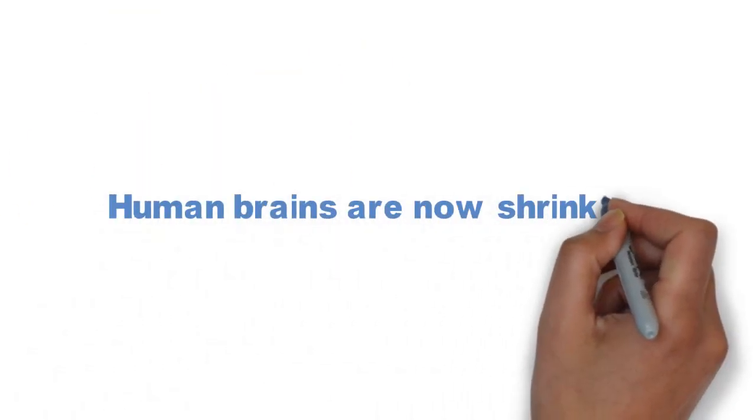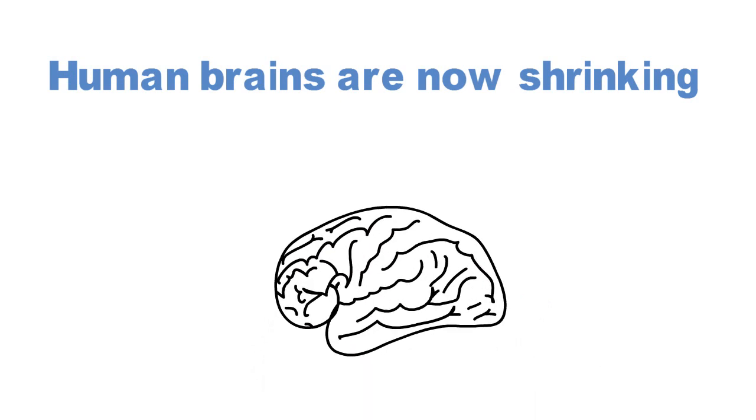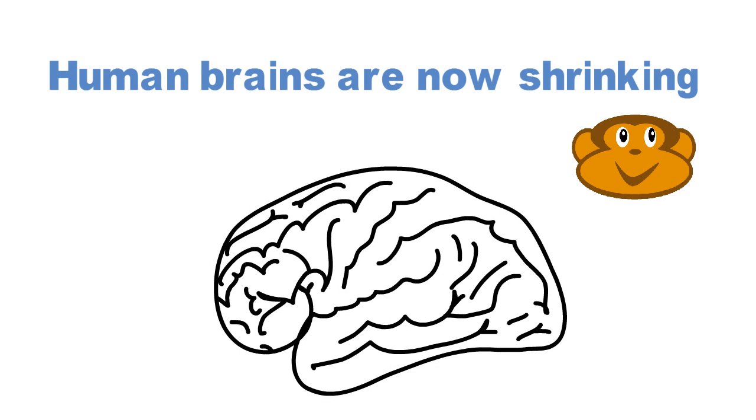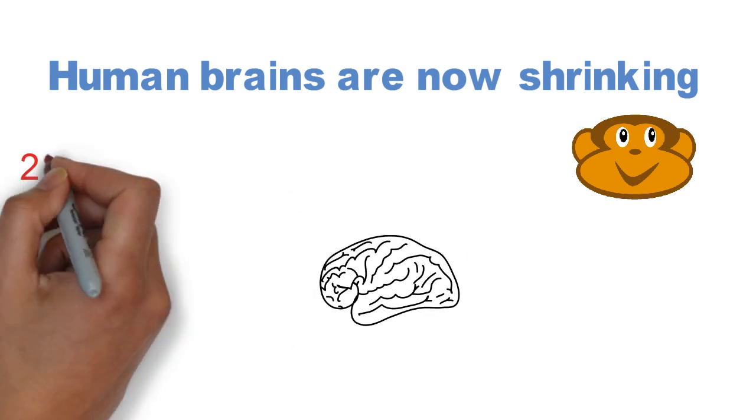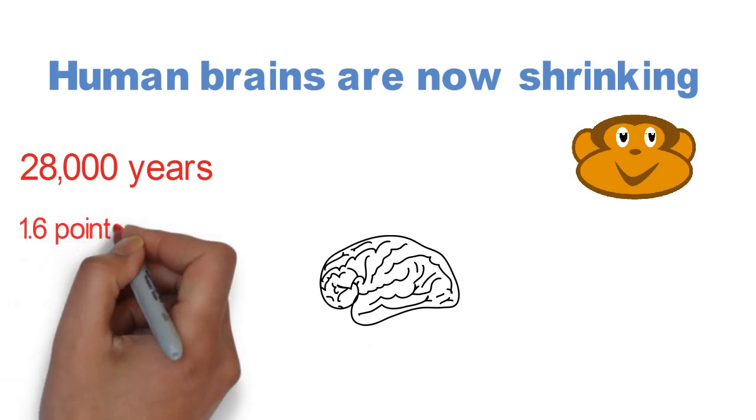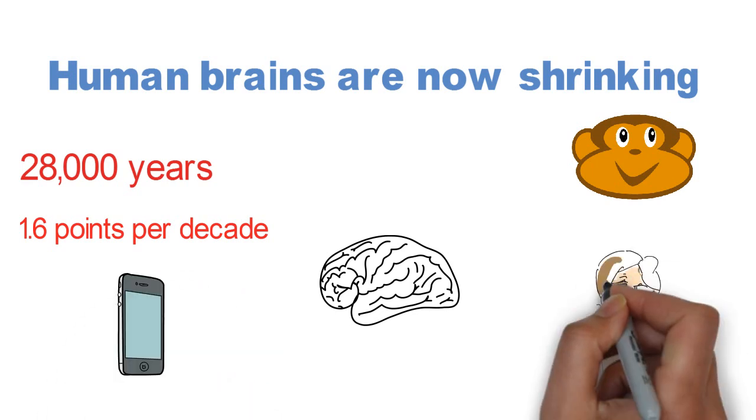Human brains are now shrinking. We normally think that human race is getting smarter and our brain sizes must be increasing. But this is not true. Since early primates, the brain started growing. But this increase in brain size stopped with Neanderthals. The average brain size has now been shrinking over the past 28,000 years. We are not getting any smarter either. Average IQs have been going down 1.6 points per decade. So it is only our phones which are getting smarter, not us.